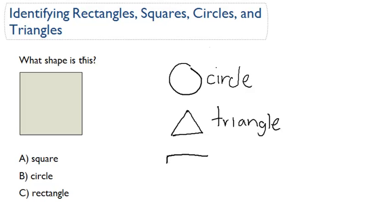We went over rectangles, which have four sides, and two pairs of equal sides. So this is one pair here, and this is another pair here, these two. So that's a rectangle.